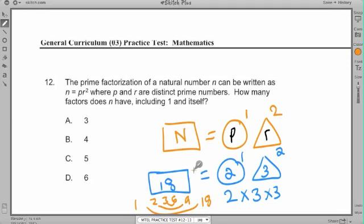So if we use the rules, if we use the framework that they gave us, p to the first times r to the second, that would be like 2 to the first times 3 to the second. It would get us a natural number that has 6 factors. The answer would be d.